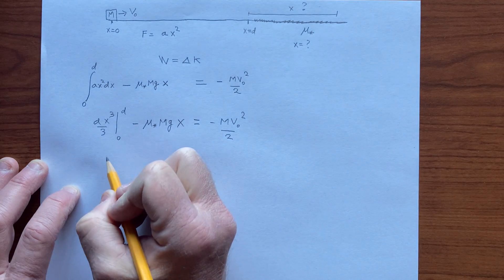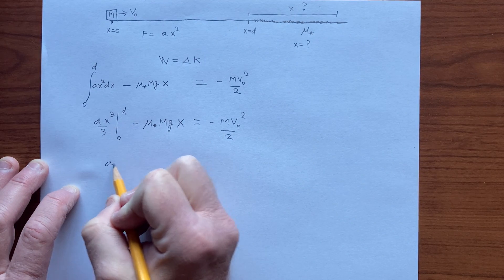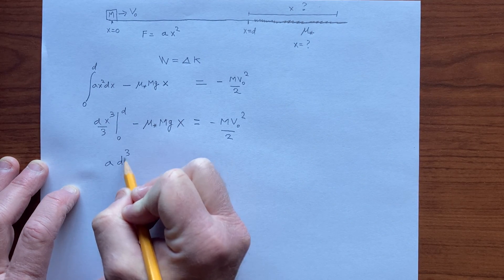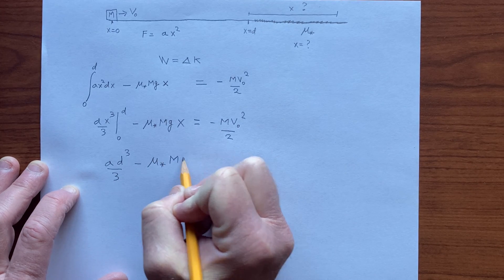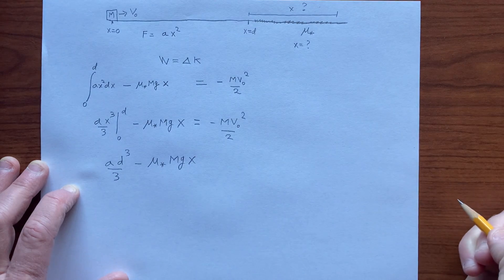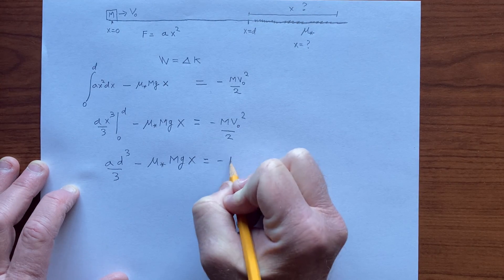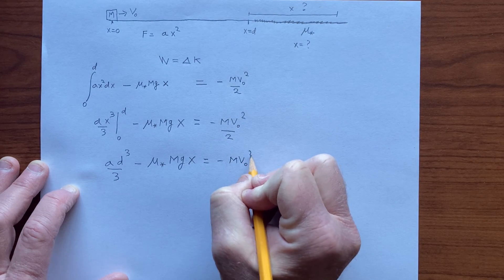And so this becomes a d cubed over 3 minus mu star mg times x equals minus m v-naught squared over 2.